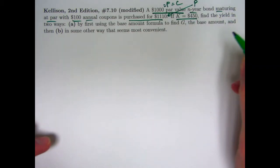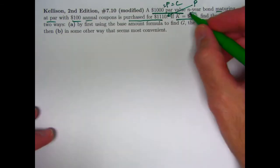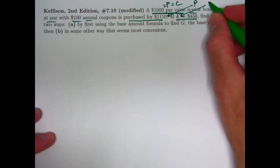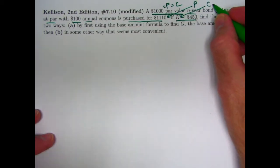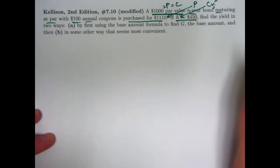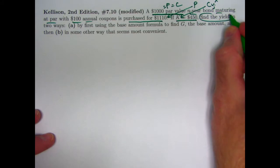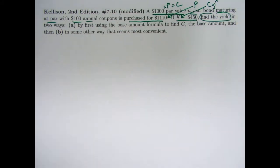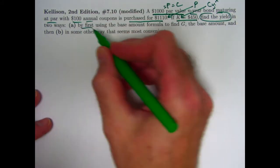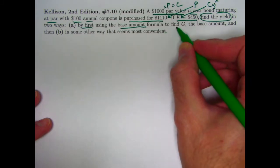We're told that K is 450. K is the present value of the redemption value. It equals C times V sub j to the N and it equals 450. The goal is to find the yield in two ways, two unusual ways, by first using the base amount formula to find capital G, which is called the base amount.